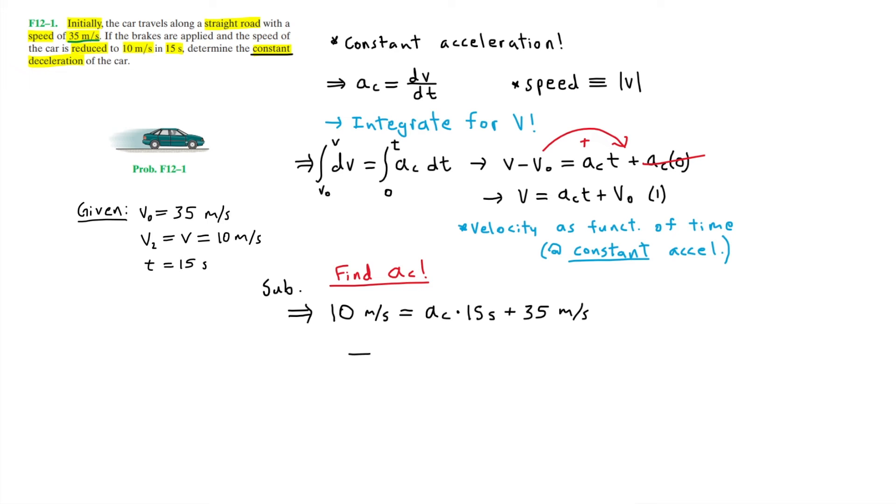Hence, we can subtract the 35 to the left, so that'll be 10 minus 35, which is negative 25, and that equals A sub C times 15. Now, dividing the 15 seconds to the left, we have negative 25 meters per second divided by 15 seconds. Therefore, we get A sub C equals negative 1.67 meters per second squared.